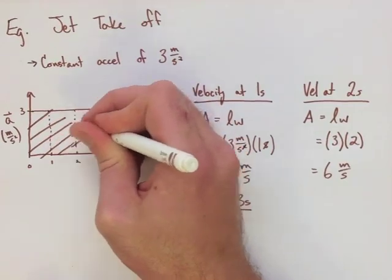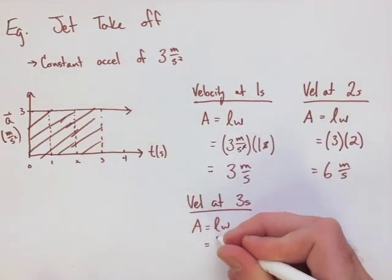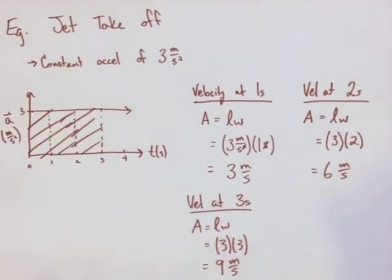You'll see that we go through this same process again and again for both 3 seconds and 4 seconds, finding the velocities to be 9 meters per second and 12 meters per second, respectively.